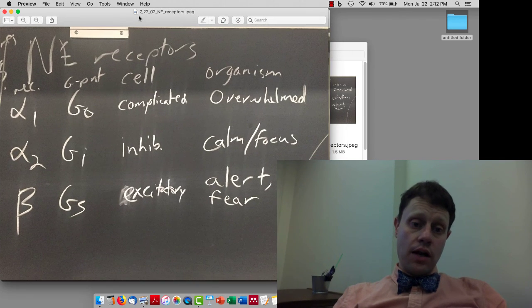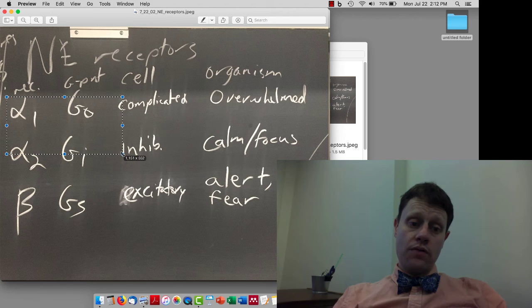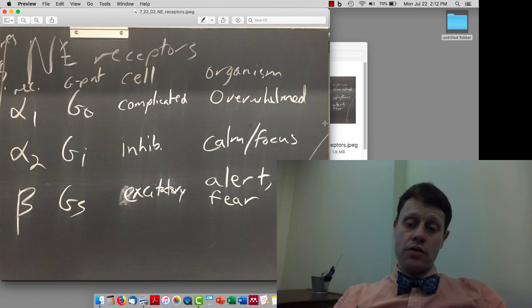Related to that, we reviewed the different types of norepinephrine receptors, and we're going to return to those, especially the alpha-1 versus alpha-2s when we talk about depression.